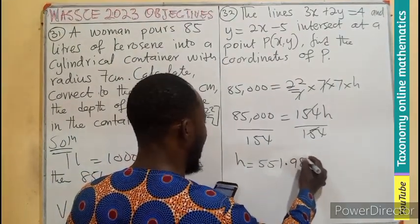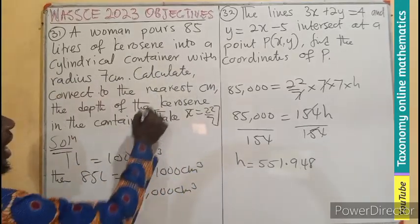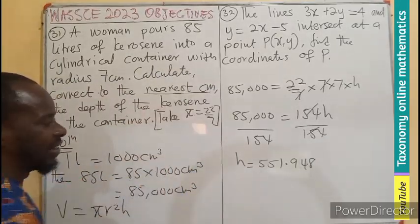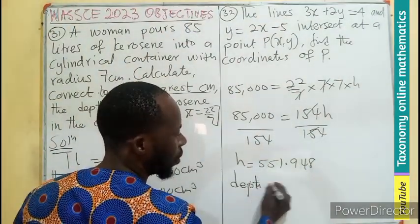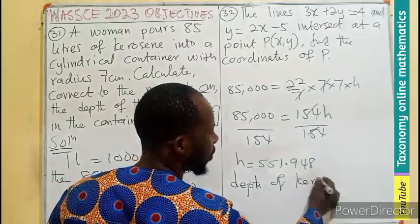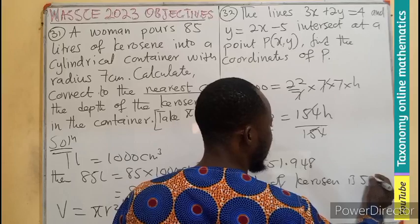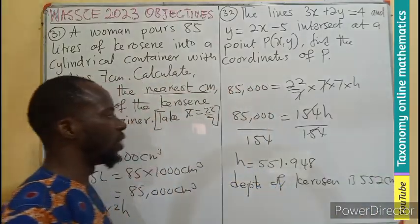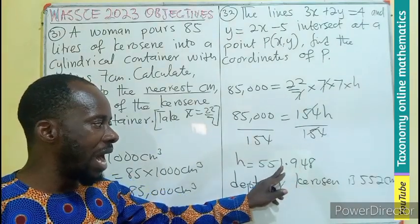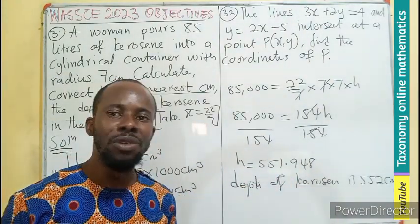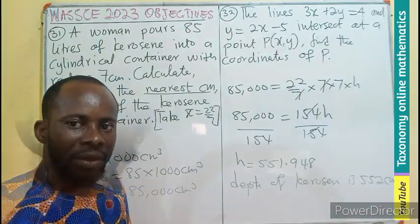But we are asked to write the answer in the nearest cm, meaning the depth of kerosene is going to be 552 cm to the nearest whole number. This is more than 5, so we added 1 to become 552 cm, which is the height or the depth of kerosene in the container.